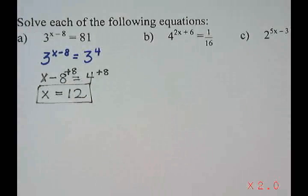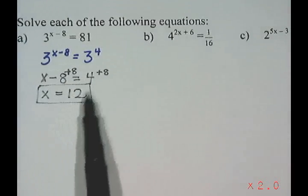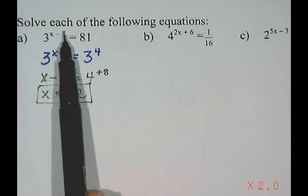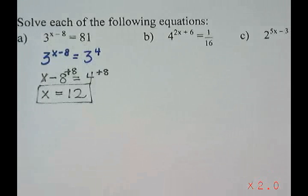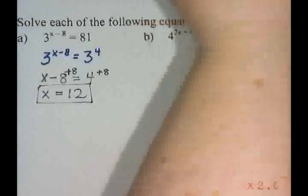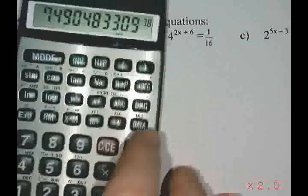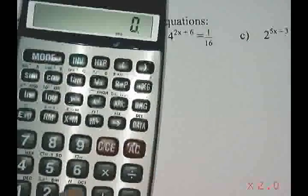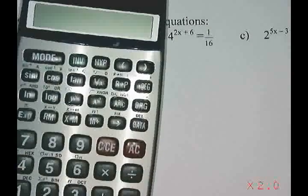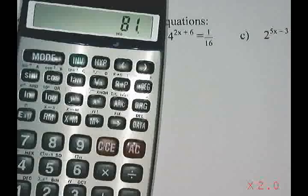You can check that by substituting back in. If you do 12 minus 8, that's 4. And on your calculator, 3 to the power of 4 is 81.